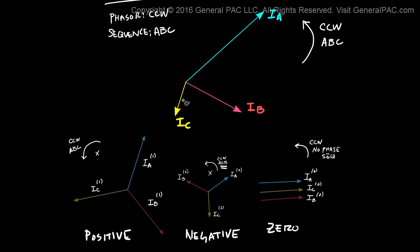Let's back up and recap. We have this unbalanced set of phasors rotating counterclockwise in an A, B, C phase sequence system. Our Positive Sequence Component is also rotating counterclockwise with a phase sequence of A, B, C — the same as our system. The Negative Sequence Component is rotating counterclockwise, but its phase sequence is A, C, B — the opposite of our system. And the Zero Sequence Component is also rotating counterclockwise, but it has no phase sequence.